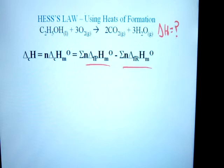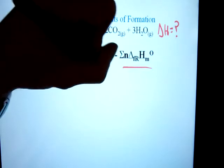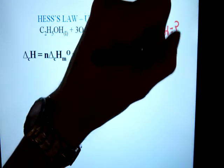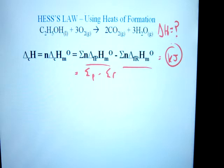You can simplify this as: sum of the products minus sum of the reactants. With Hess's Law, regardless of the type you are working with, it always ends up in kilojoules. Please be careful of that — you have to make sure you identify whether you are looking for kilojoules in the end or kilojoules per mole in the end. Kilojoules is for the entire reaction; kilojoules per mole is for one specific substance. In this case, we are looking for the entire reaction's energy.